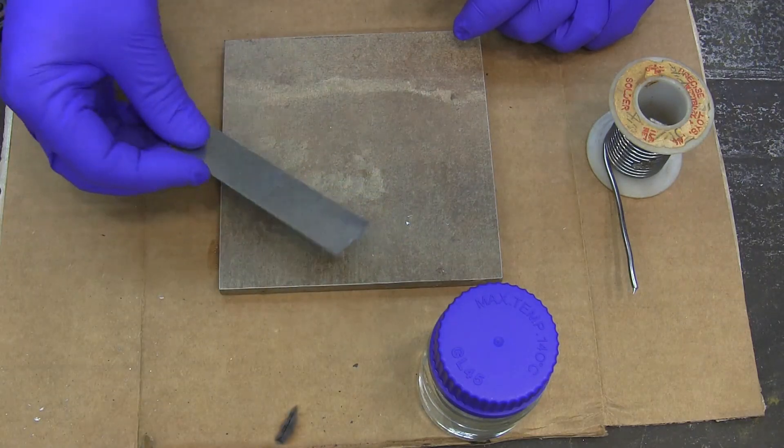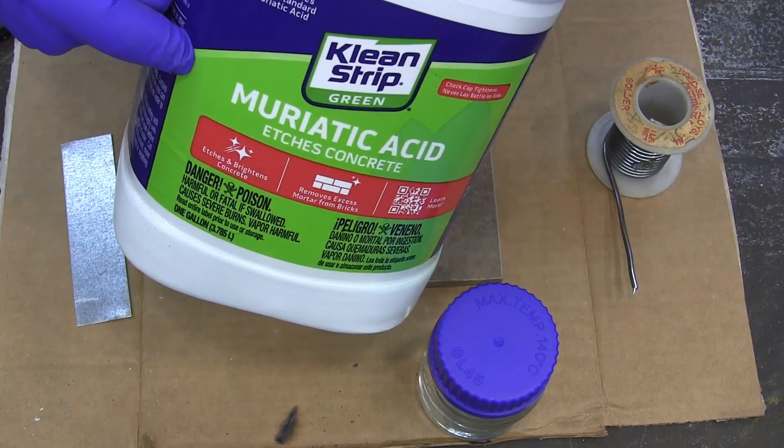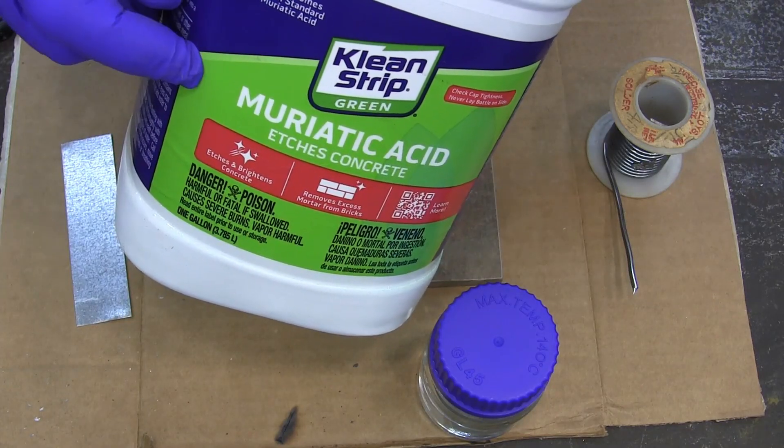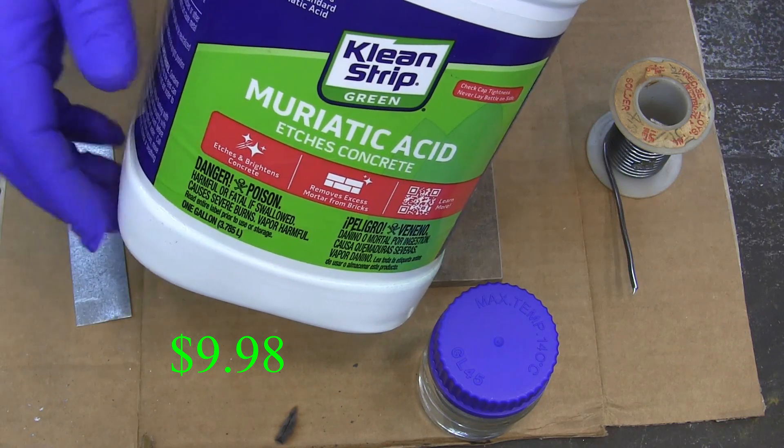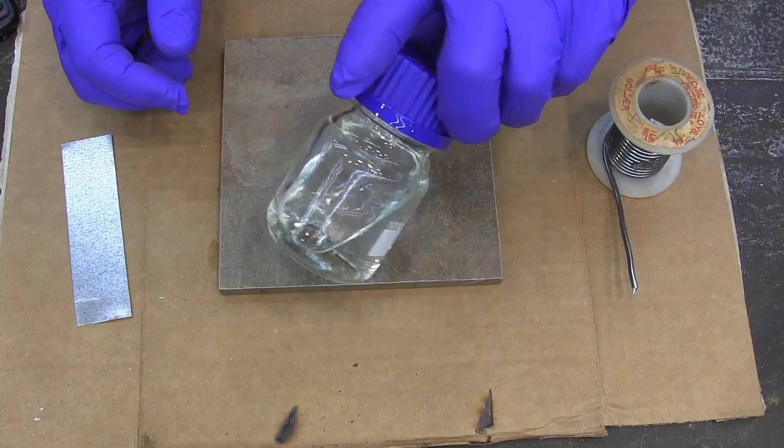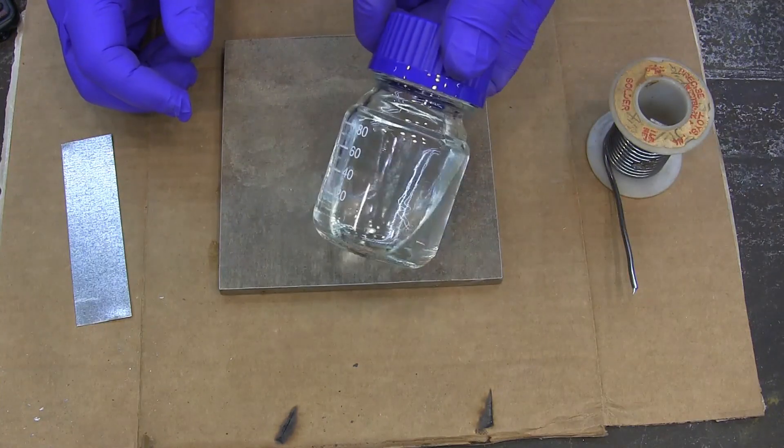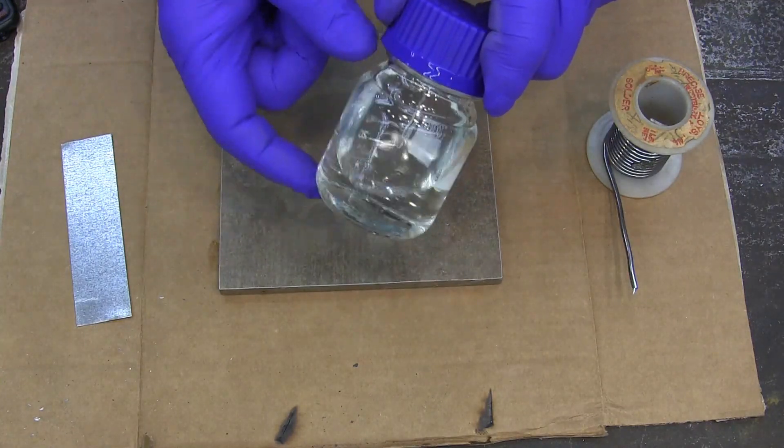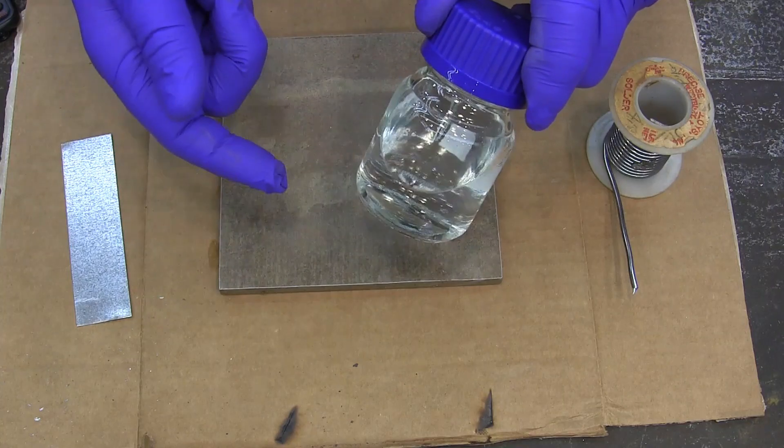What you need is muriatic acid. This is from Home Depot. I'll list it in the description for you. I don't remember the price but I'll put it on the screen there. And then I bought this little reagent jar. I'll put these in the description for you too just so that I could keep a small quantity of it handy to be able to use.